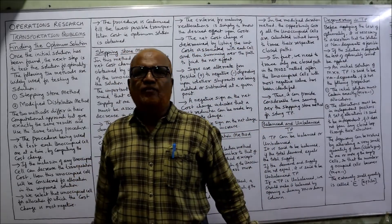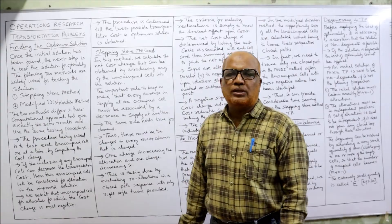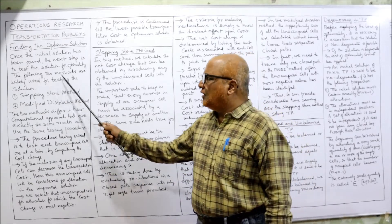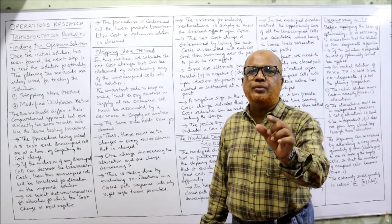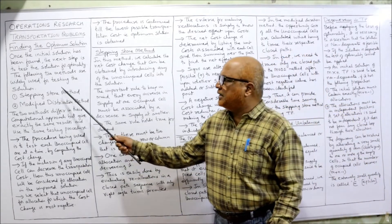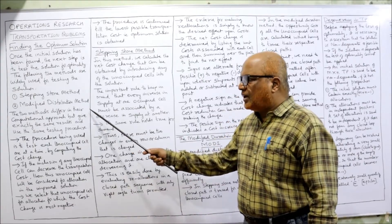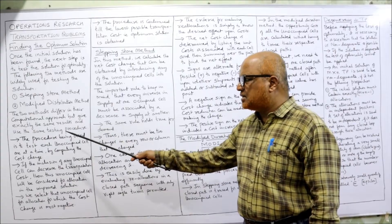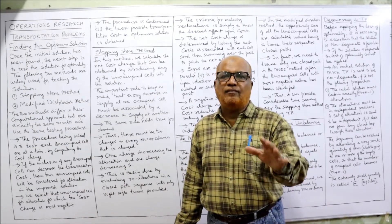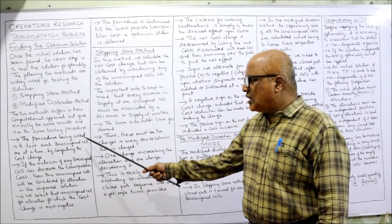Our topic now is finding out the optimum solution. Once the initial solution has been found, the next step is to test the solution for optimality. The two methods widely used for finding the optimum solution are: the first method is the Stepping Stone method, and the second method is the Modified Distribution method, called the MODI method. The two methods differ in computational procedure but give exactly the same result.